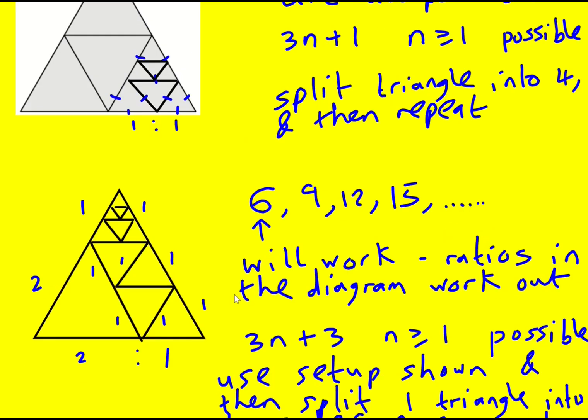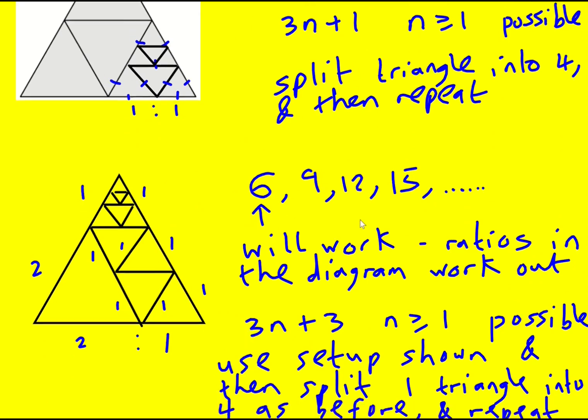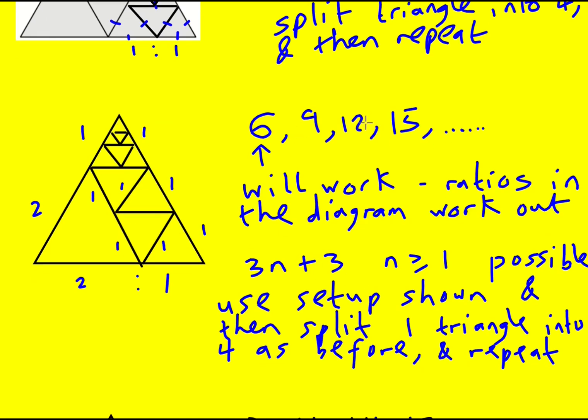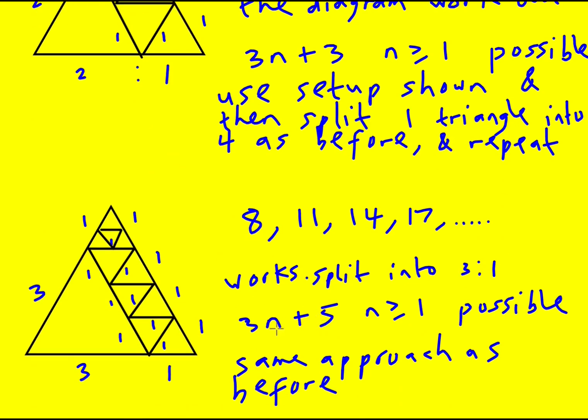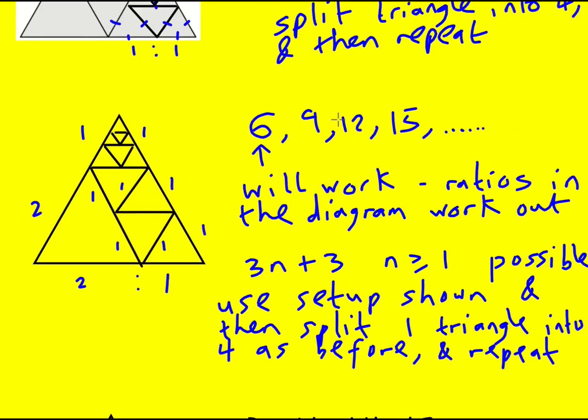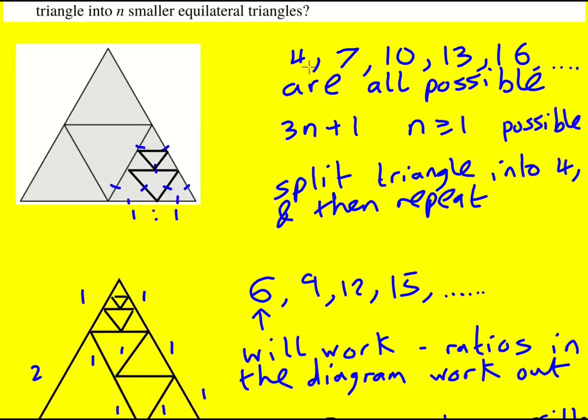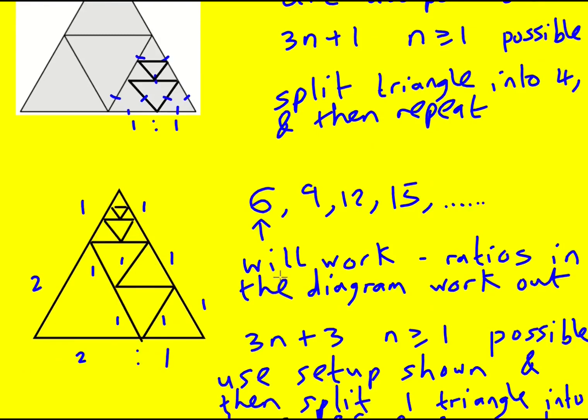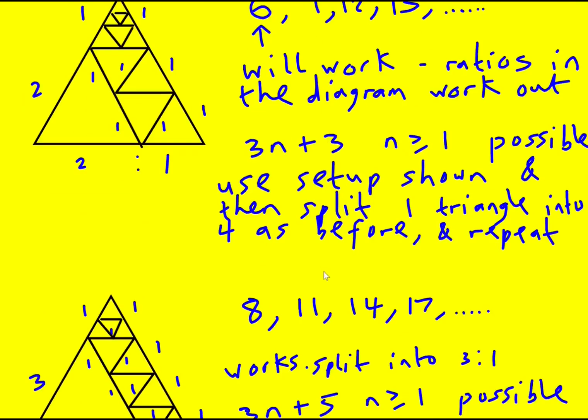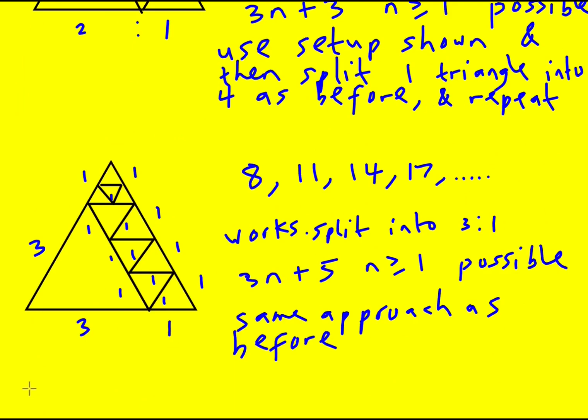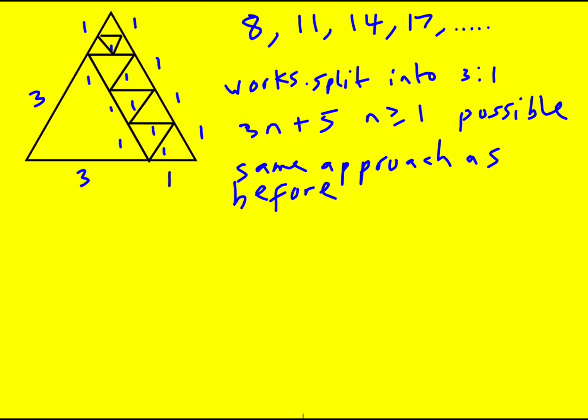All right and so I've got one more than a multiple of three. This is actually these are my multiples of three and here these are two more than a multiple of three in fact. So I've managed to get four, six, seven, eight. I'm just going to write them down actually.